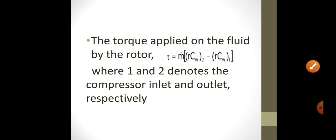The torque applied on the fluid by the rotor can be given as tau equals m dot times (r*cw)2 minus (r*cw)1, where 1 and 2 denote the compressor inlet and outlet respectively, where c denotes absolute velocity.